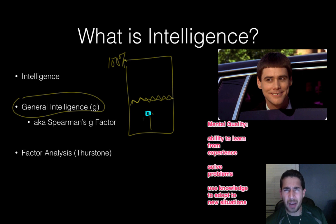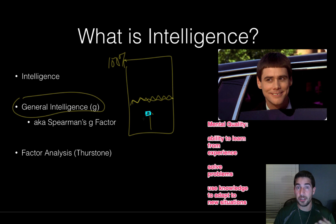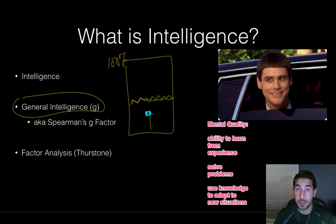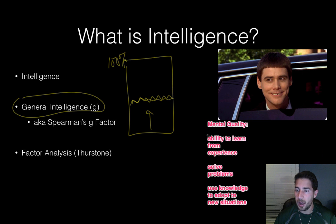However, a problem with general intelligence — critics of Spearman say — you can measure general intelligence reliably with intelligence tests, and you'll get the same results showing somebody's general intelligence. But how do we talk about people who are really good at something but maybe really bad at something else? Somebody might have an amazing memory and be able to learn from experiences, but they might stink at something like social intelligence.